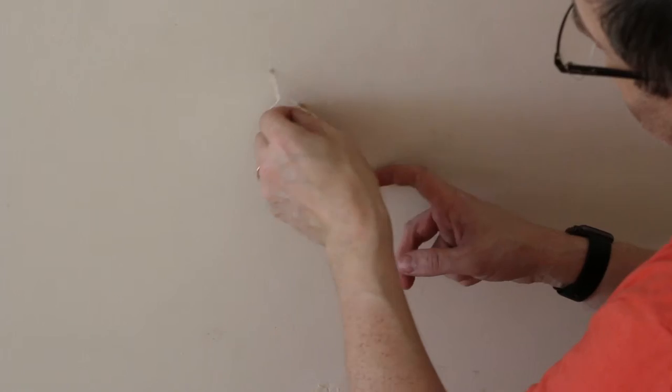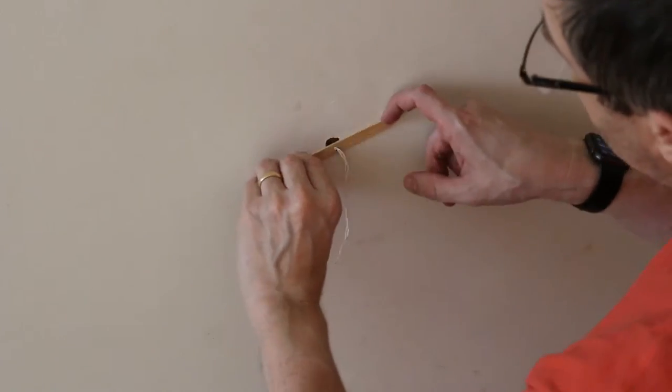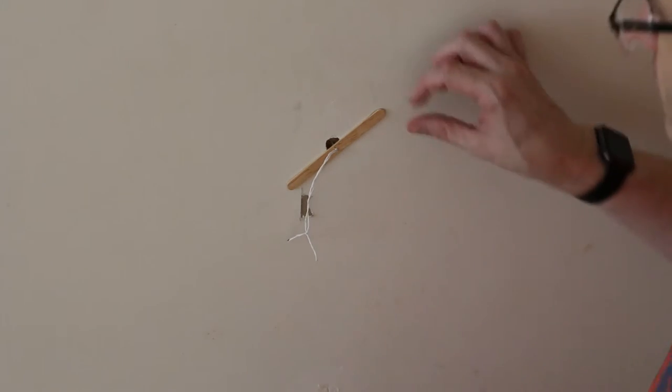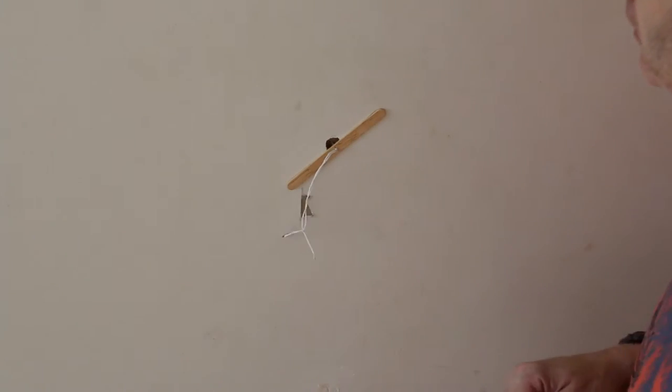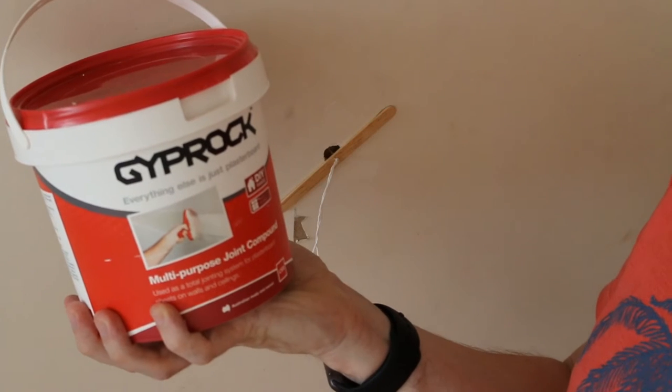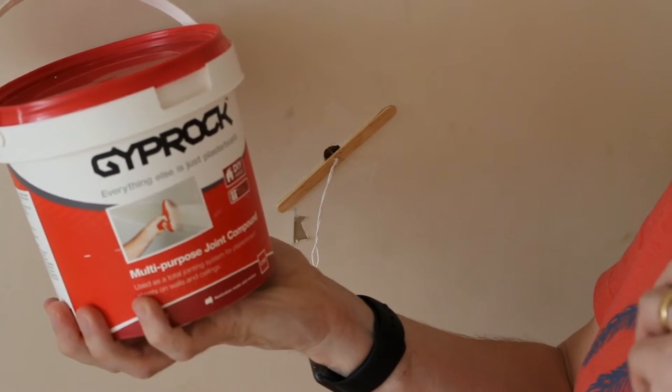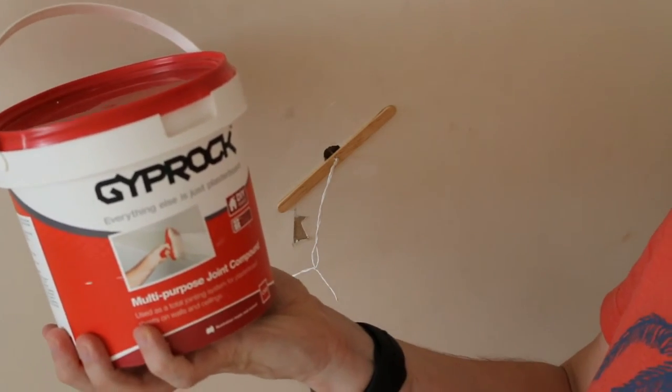So hopefully the stick on the other side will now be sticking to the other side of that, and then I'll be able to just fill in the hole. So I have some joint compound remaining from our project in the laundry, so I'm just going to use that to fill up the hole.